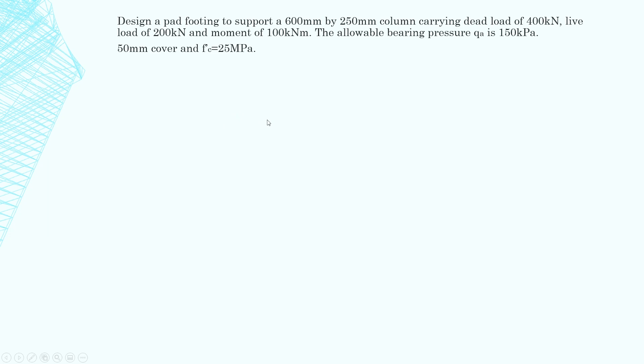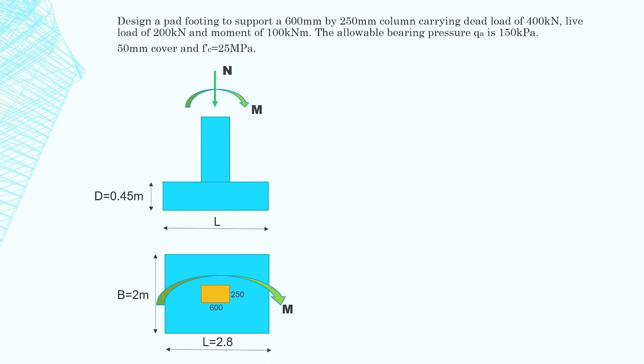Design a pad footing to support a 600 by 250 millimeter column carrying a dead load of 400 kilonewtons, a live load of 200 kilonewtons and a moment of 100 kilonewton meters. The allowable bearing pressure QA is 150 kPa, which you get from your geotech. Let's adopt 50 millimeters cover and the concrete strength 25 MPa. So that's our pad footing dimensions. We've got the depth of 450, we've got an axial load and a moment.